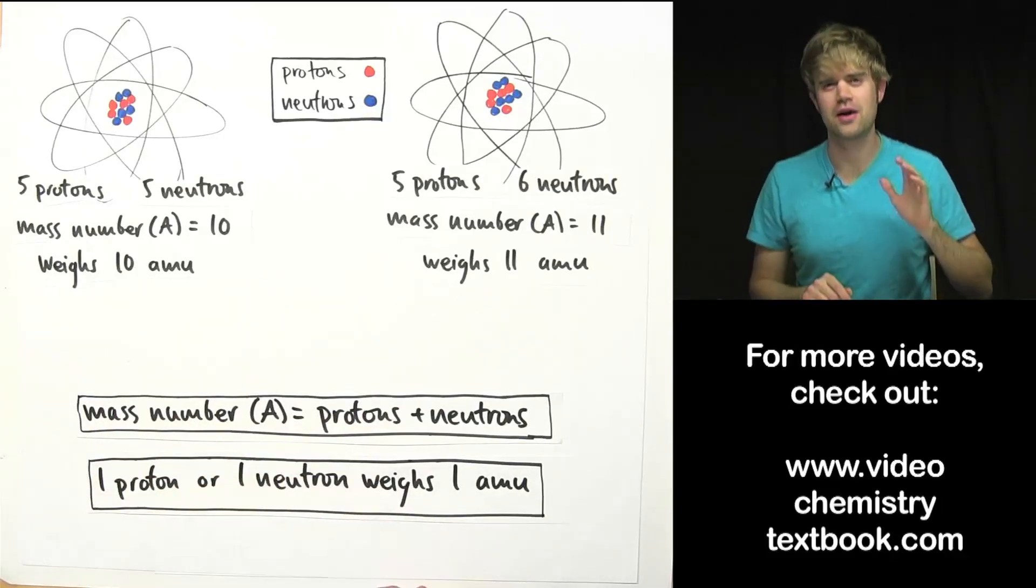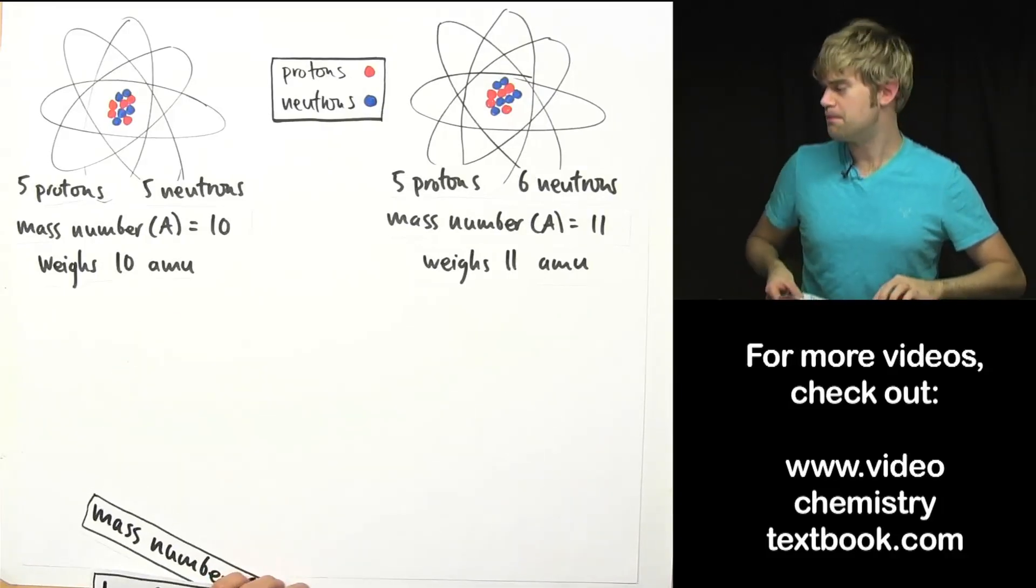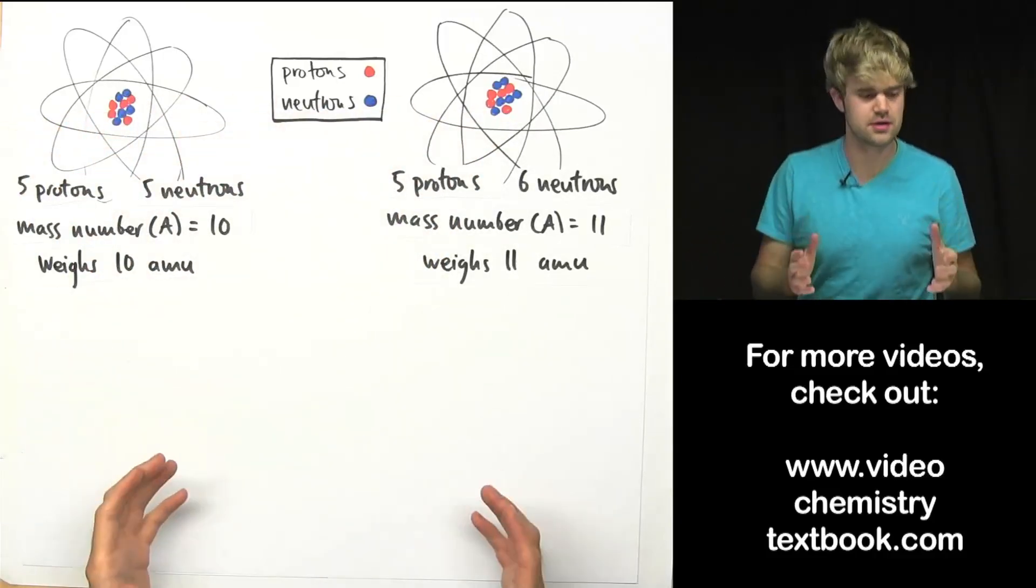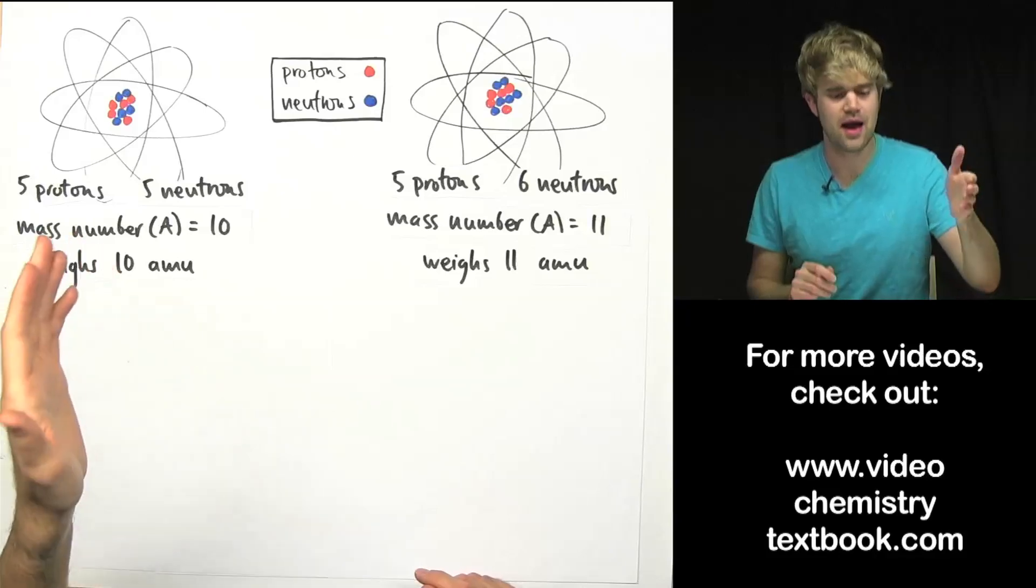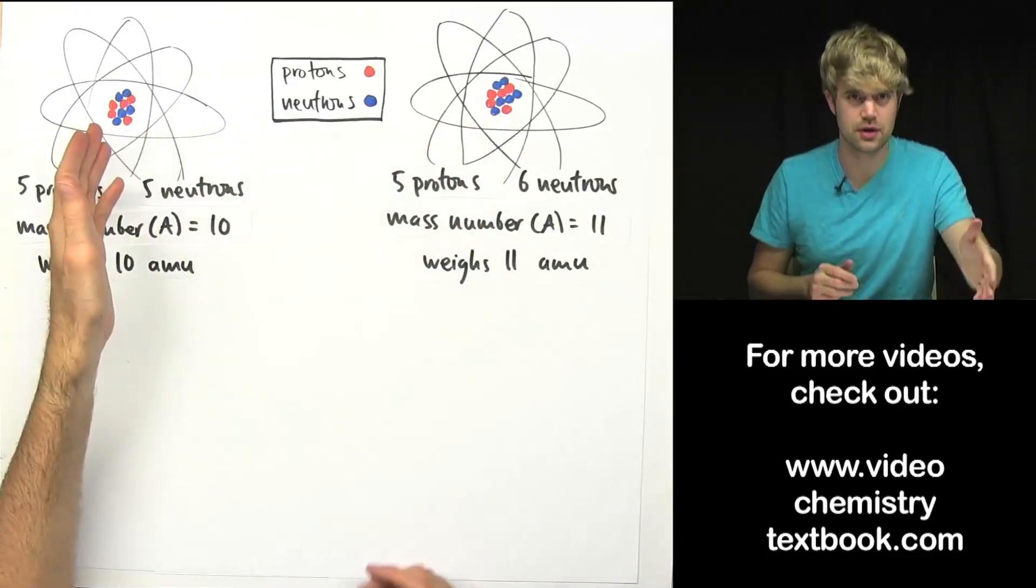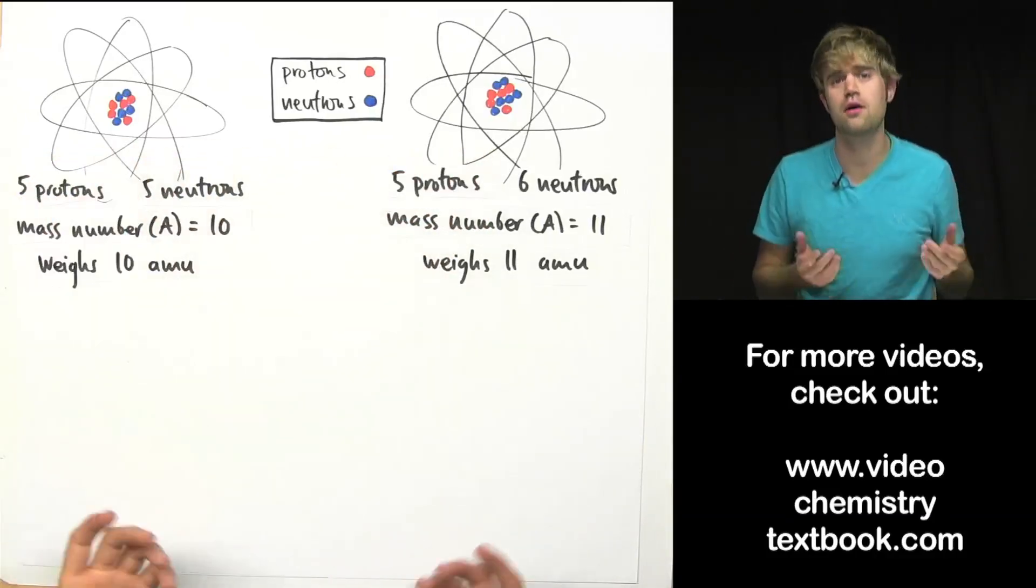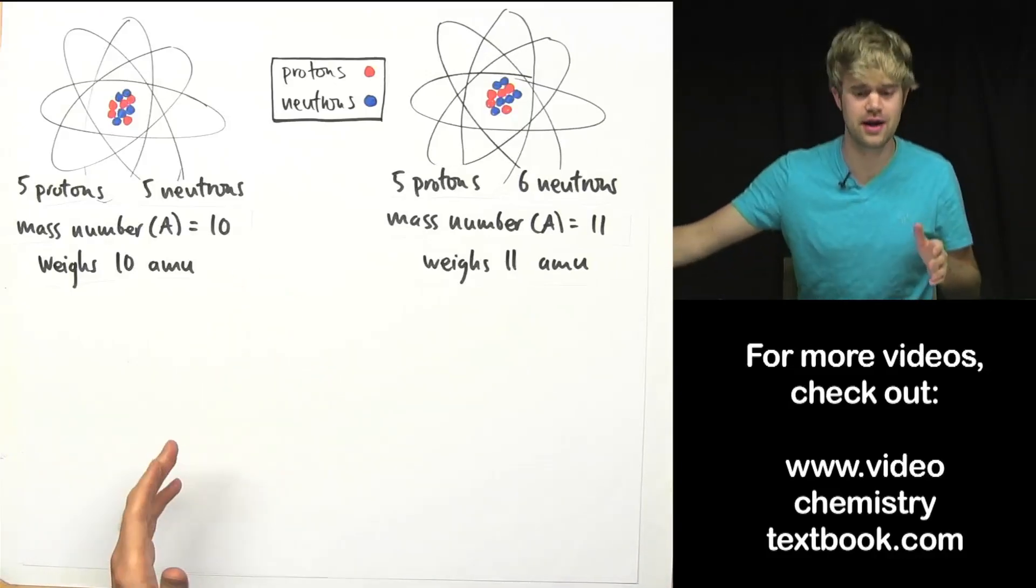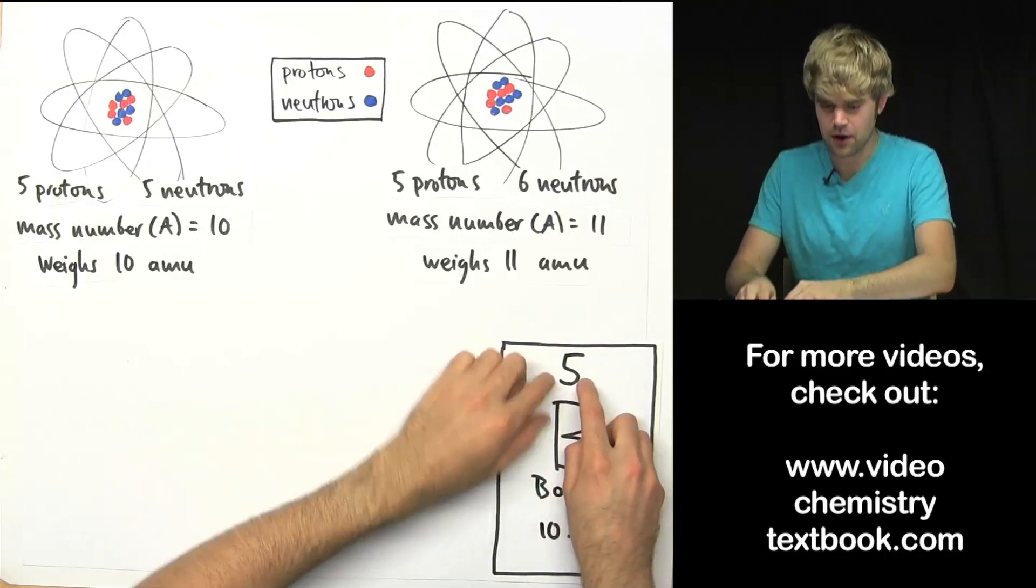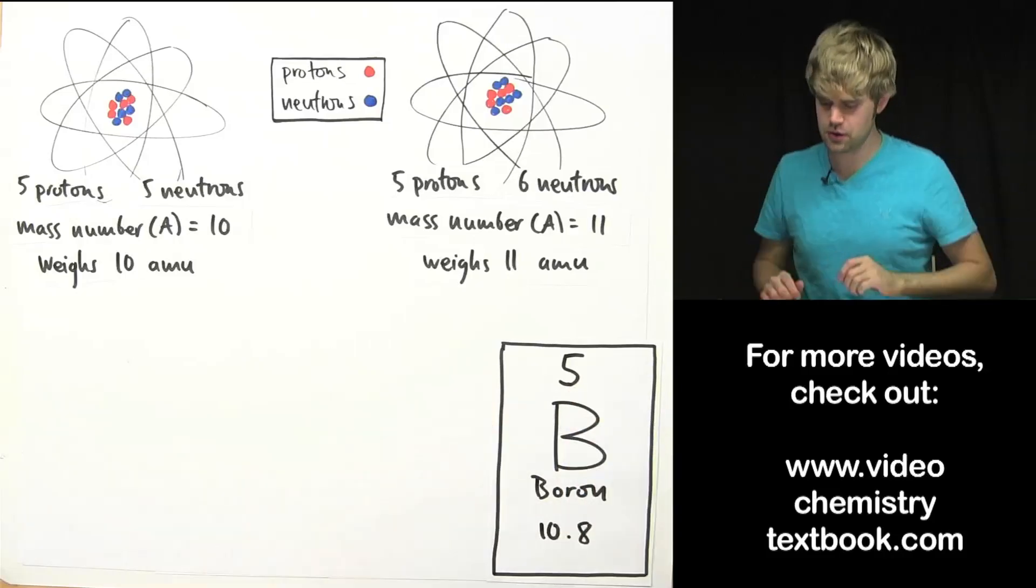Now let's move on to talk about atomic weight. So you might notice here that both of these atoms have the same number of protons which means that they are the same element, right? Because the number of protons that an atom has in its nucleus determines what element it is. So what element are these two atoms? We can look on the periodic table to find that out and it turns out that boron with atomic number of 5 is what both of these atoms are because they have 5 protons in their nucleus.